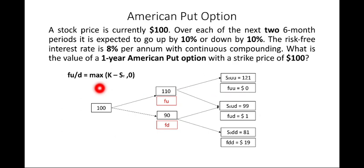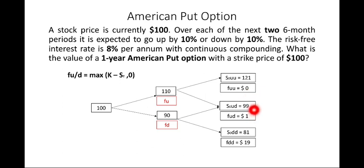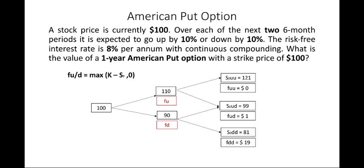For the put option, we recalculate f_uu, f_ud, and f_dd. For f_uu: S_T = 121, so max(100 − 121, 0) = max(−21, 0) = 0. For f_ud: S_T = 99, so max(100 − 99, 0) = max(1, 0) = 1. For f_dd: S_T = 81, so max(100 − 81, 0) = max(19, 0) = 19.